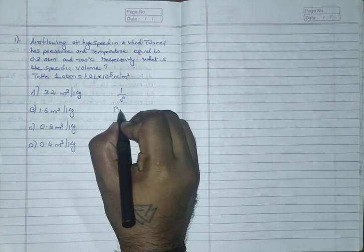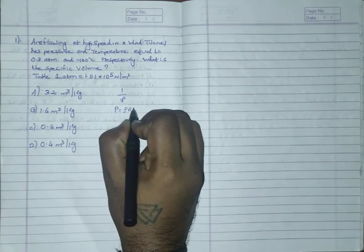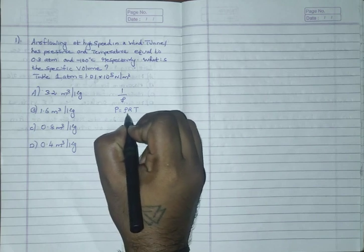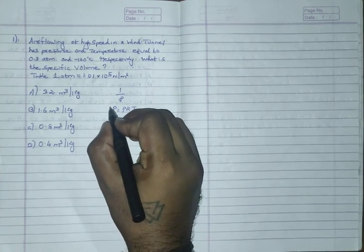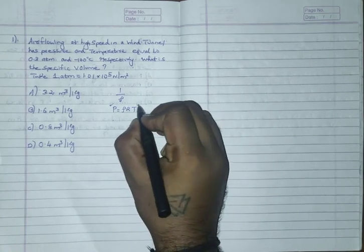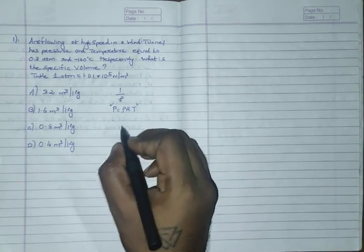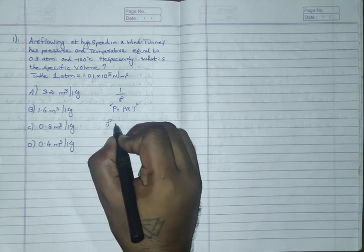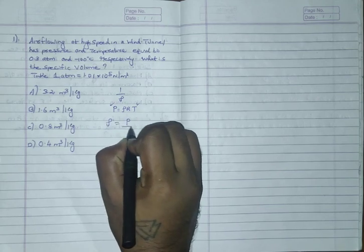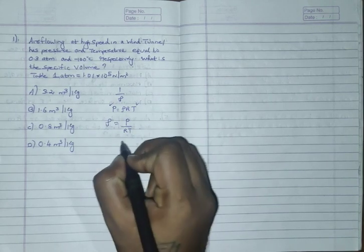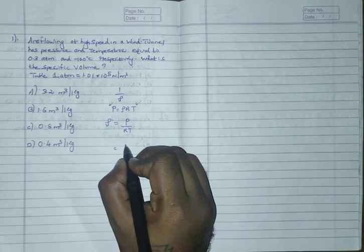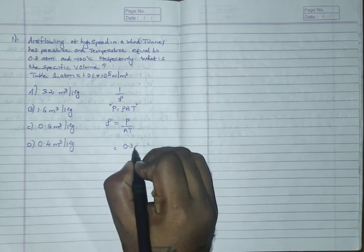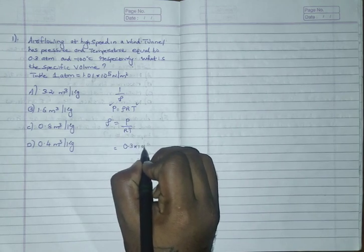We have the value of pressure, we have the value of temperature, so we have to calculate the value of rho. Rho I can calculate is equal to P by RT. So what is the value of P here? P is 0.3 atm, 0.3 times 1.01 times 10 power 5.